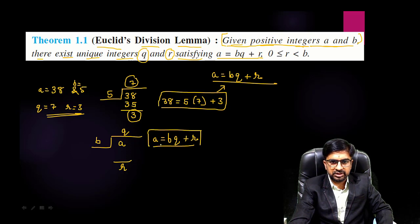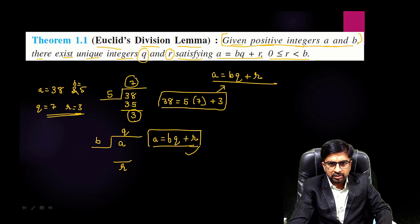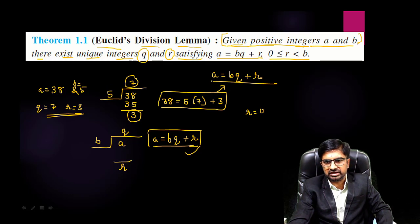This is the representation of Euclid's division lemma. Now what is this last part: where r is greater than or equal to 0 but less than b? Here you can see you are getting remainder 3.